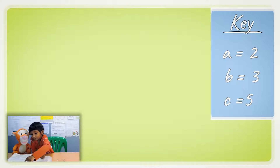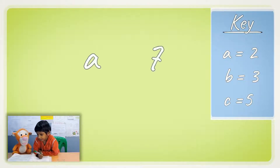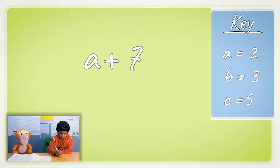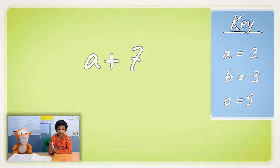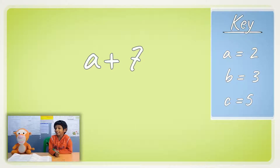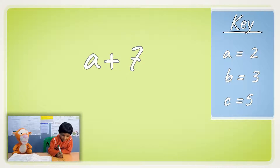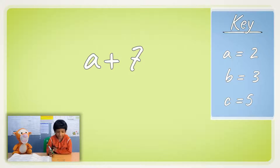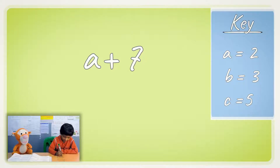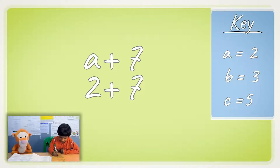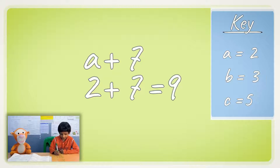So let's do A plus 7. Remember, A is equal to 2. We'll use the first key. You can see it on the book, right? So let's take A plus 7. A is equal to 2 — that's the key. So let's write it as 2 plus 7. 2 plus 7 is 9. And that's it.